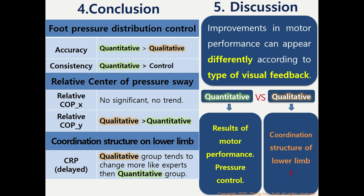To sum up, the quantitative group controlled plantar pressure better and swayed less than the qualitative group, while the qualitative group tended to change their coordination structure of the lower limb toward that of experts more than the quantitative group.